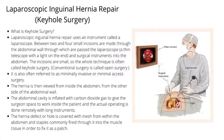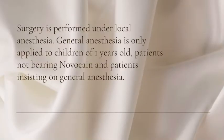The abdominal cavity is inflated with carbon dioxide gas to give the surgeon space to work inside the patient, and the actual operating is done remotely with long instruments. The hernia defect or hole is covered with mesh from within the abdomen, and staples are commonly fired through it into the muscle tissue in order to fix it as a patch. While open surgery is the traditional way to repair a hernia, laparoscopic surgery often allows patients to recover faster and causes less pain. Laparoscopic surgery requires general anaesthesia, whereas traditional hernia repair can be done under general, regional, or local anaesthesia. Surgery under local anaesthesia is preferred; general anaesthesia is only applied to children under 1 year old, patients not tolerating Novocaine, and patients insisting on general anaesthesia.